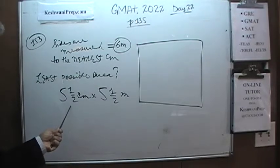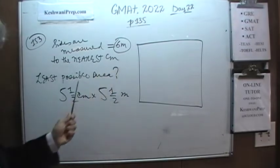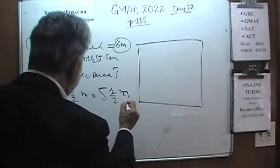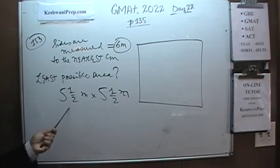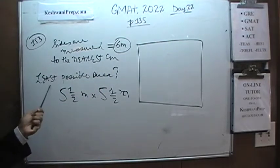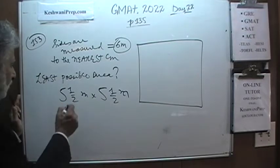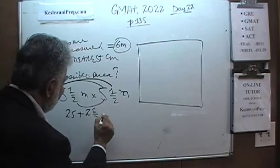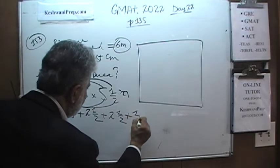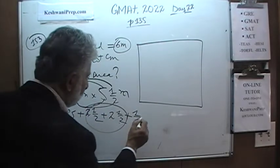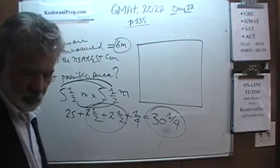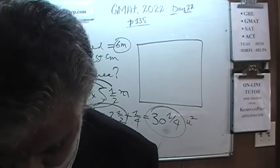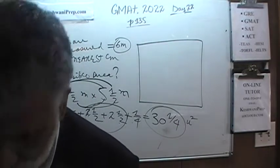The smallest side that still rounds to 6 is 5.5 units. So the least possible area is simply 5.5 times 5.5. Let's calculate: 5 times 5 is 25. Half of 5 is 2.5, and we have two of those cross terms giving 2.5 plus 2.5 equals 5. And half times half is a quarter. So the total is 25 plus 5 plus 0.25 equals 30.25, or 30 and a quarter square units. The answer is 30 and a quarter.